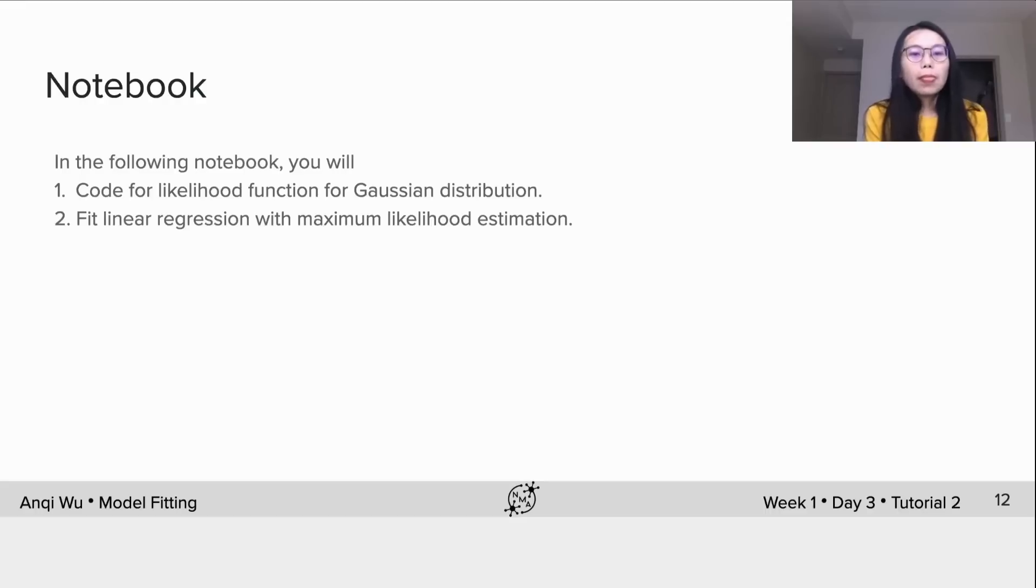So in the following notebook, you will code for likelihood function for Gaussian distribution. You will fit linear regression with MLE estimator. Hope you enjoy.